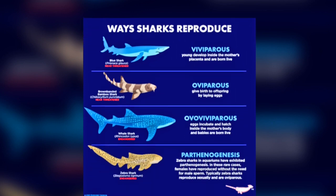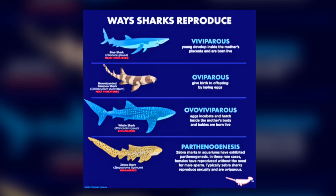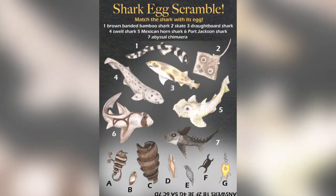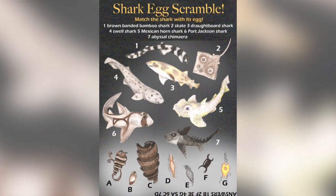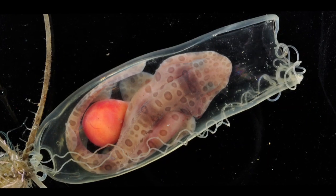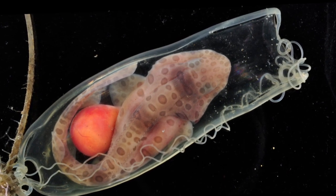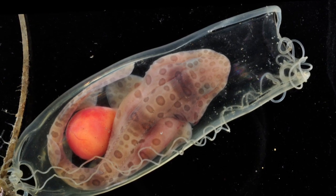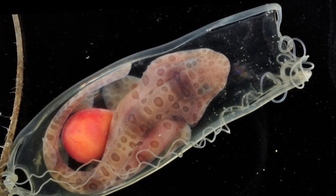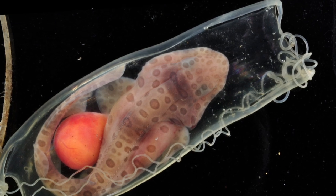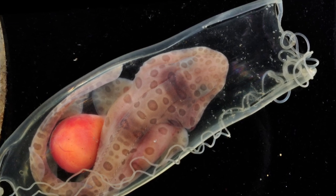About 30% of sharks are oviparous — that is, they lay eggs. The eggs are placed in rocks or algae, and the embryos develop in the egg and feed on the yolk. Depending on the species, these sharks will lay anywhere from 10 to 200 eggs. Examples of oviparous shark species include the epaulette shark and horn sharks.